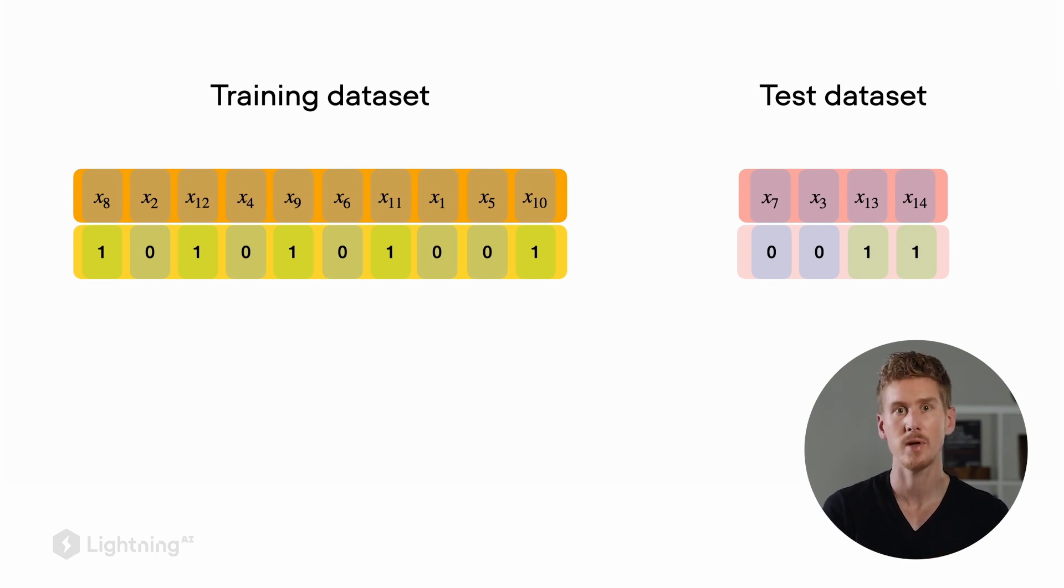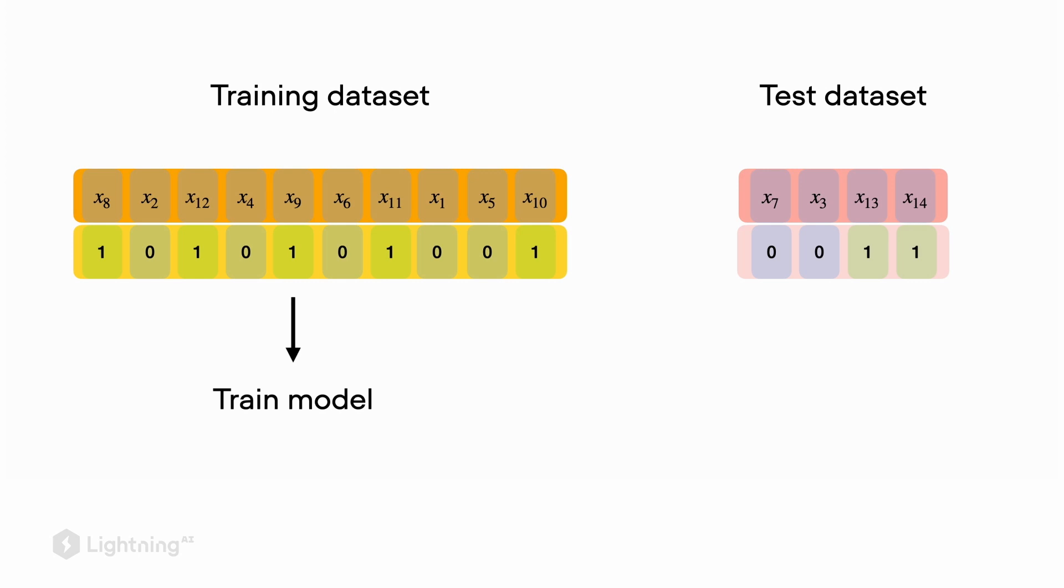Now we can use the training dataset to train our model, and we can use the separate test dataset to evaluate the performance of our trained model. It is strongly recommended to only use the test set once, at the very end, once we have our final model. That is to keep the model evaluation unbiased.